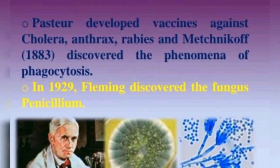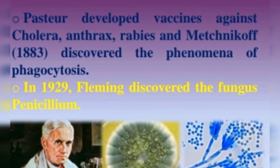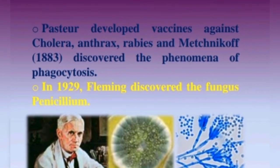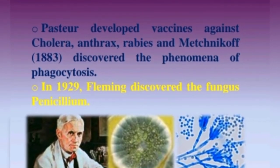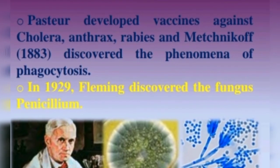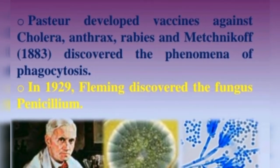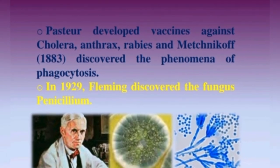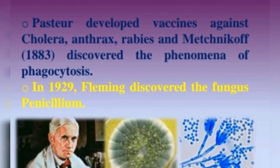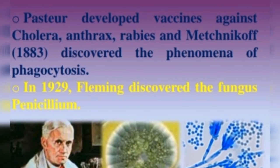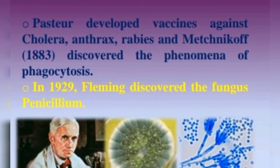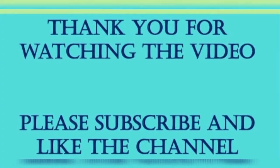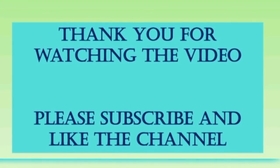Pasteur developed vaccines against cholera, anthrax, and rabies. Metchnikoff in 1883 discovered the phenomenon of phagocytosis. In 1929, Fleming discovered the fungus Penicillium, and we know that penicillin is obtained from Penicillium.